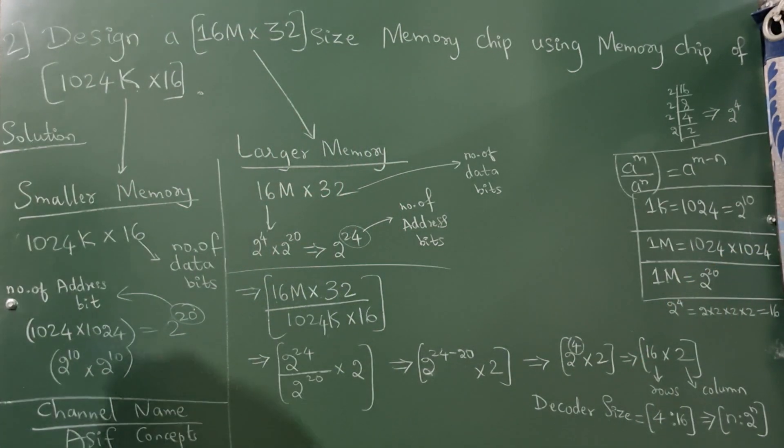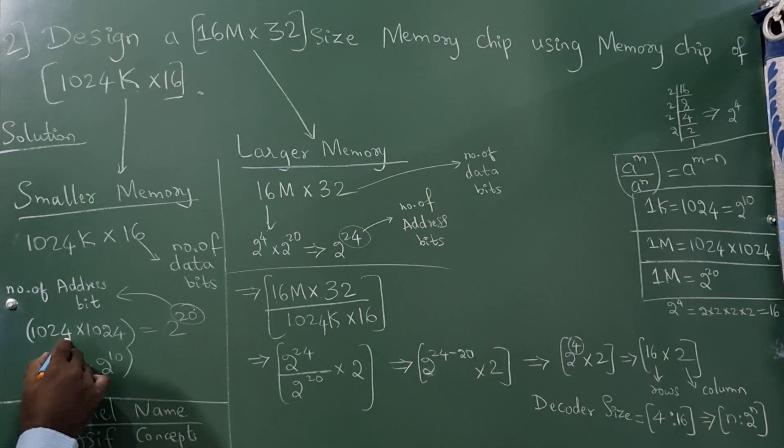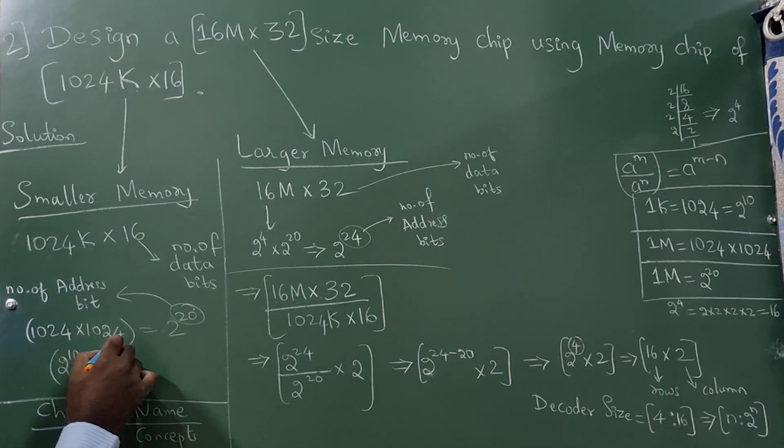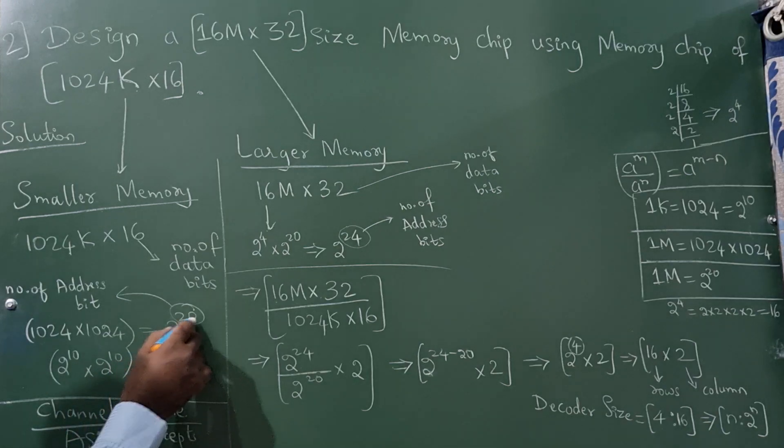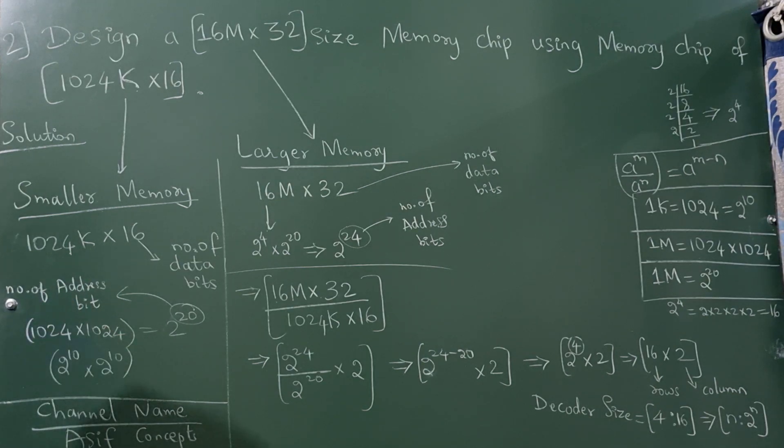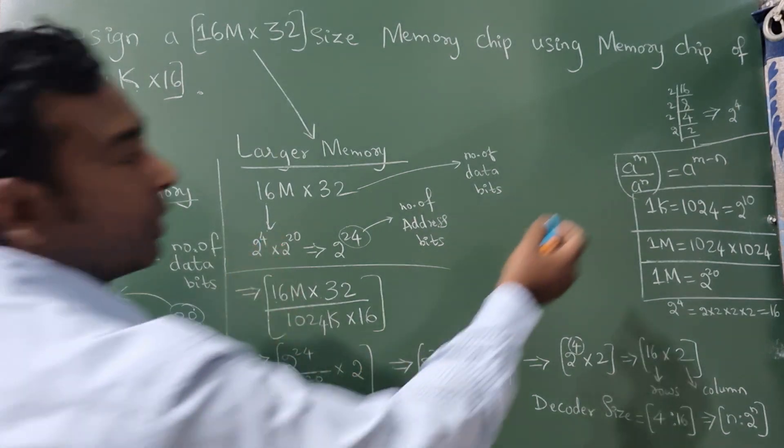1M means 1024 into 1024, so you can write 2 raise to 20. Now I have written here 1024 into K value from there it is 1024, so this is 2 raise to 10, this is also 2 raise to 10, so it is 2 raise to 20. This 20 is your number of address bits.